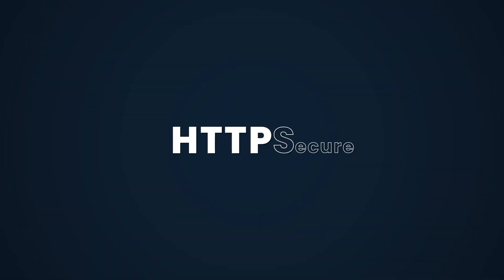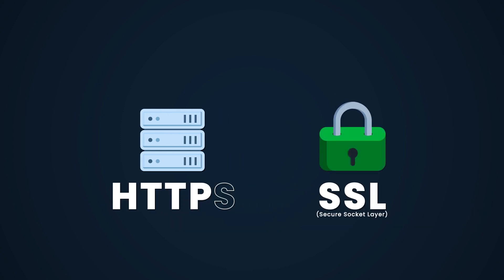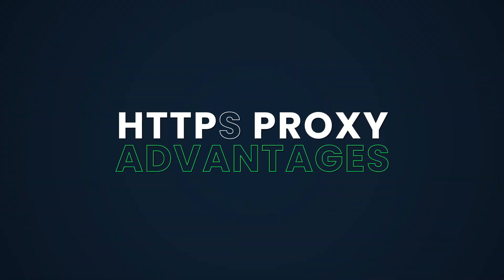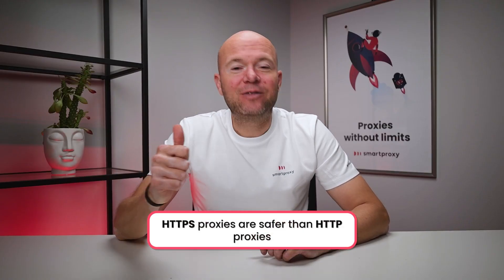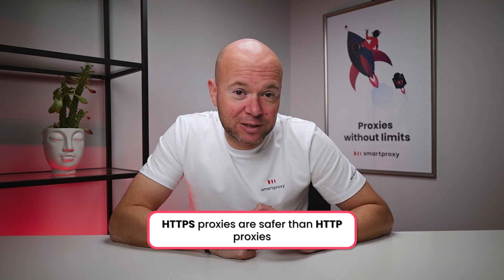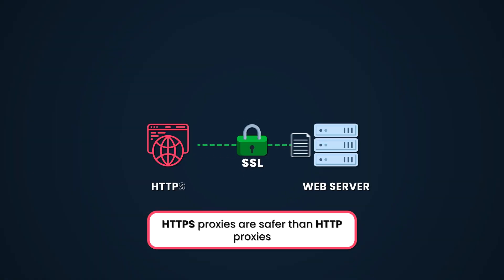HTTPS proxies, however, solve this security problem. The S at the end stands for Secure, and that's because HTTPS proxies use something called SSL, or Secure Sockets Layer. So even though at first glance that added S might seem insignificant, it hints to the increased reliability of HTTPS proxies. A proxy that uses the SSL layer for the HTTP protocol has two major advantages. First, it's safer than simple HTTP proxies. To keep others from reading your data, the SSL layer encrypts your connection so its contents are never visible to third parties like internet service providers,